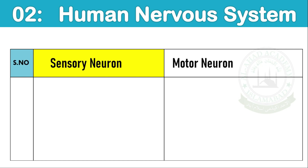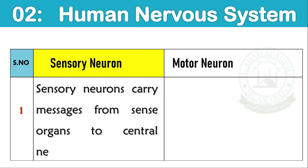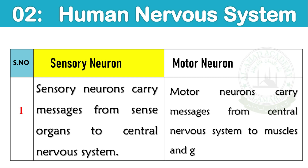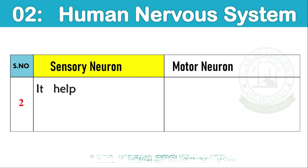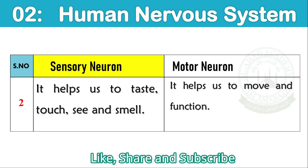Sensory Neuron and Motor Neuron: Sensory neurons carry messages from sense organs to the central nervous system. They help us to taste, touch, see and smell. Motor neurons carry messages from the central nervous system to muscles and glands. They help us to move and function.